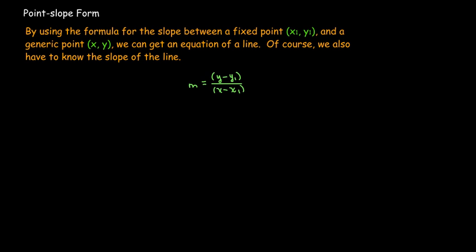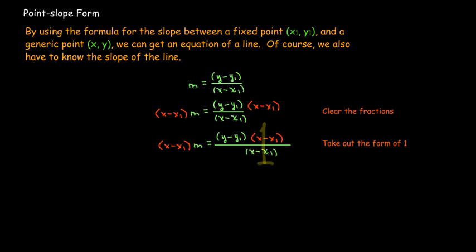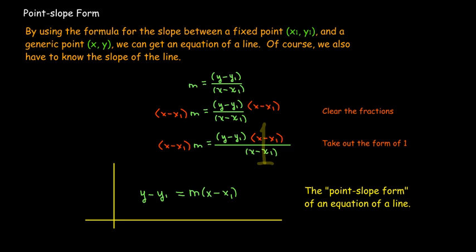That formula would be its equation. So start with your formula for the slope. Then I'm going to multiply both sides by the denominator to clear the fractions. On the right-hand side, I have a form of 1. The result is this formula: y minus y1 equals m times (x minus x1). We call this the point-slope form because we're given a point and we're given the slope.